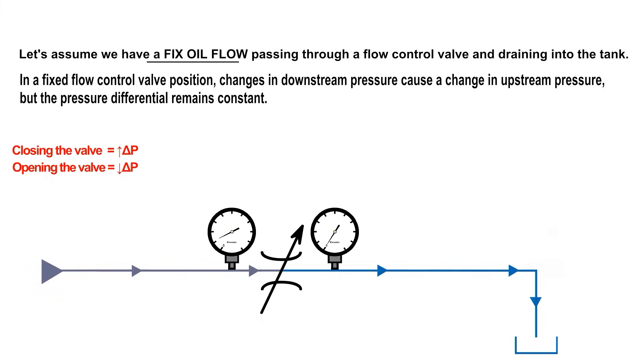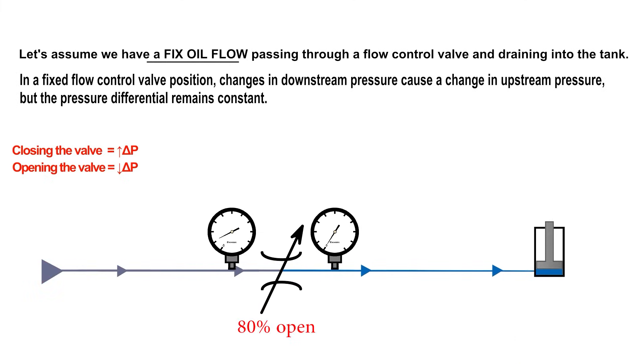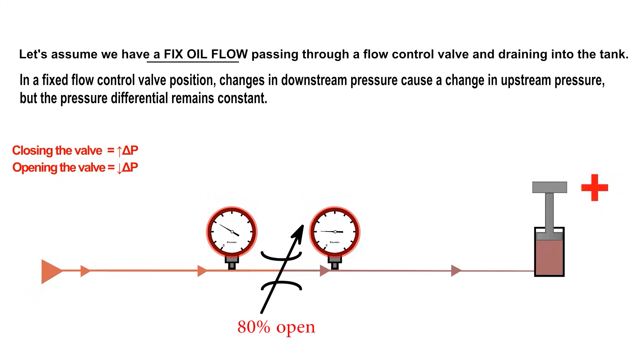In a fixed flow control valve position, changes in downstream pressure cause a change in upstream pressure, but the pressure differential remains constant.